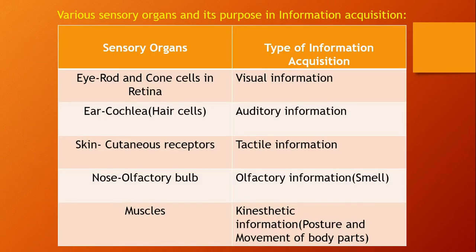Next we discuss the various sensory organs and their purpose in the information acquisition process. The eye has rod cells and cone cells in the retina, which are used for capturing visual information. The ear has a cochlea with hair cells for capturing auditory information.